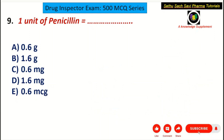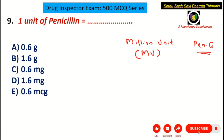Coming to the next question: one unit of penicillin is equal to — A choice: 0.6g, B choice: 1.6g, C choice: 0.6mg, D choice: 1.6mg, E choice: 0.6mcg. Penicillins are normally sold in million units, abbreviated as MU. Penicillin G injection comes in million units. One million units is equal to 0.6g. Million means 10 to the power of 6 units, so 1×10⁶ units = 0.6g.